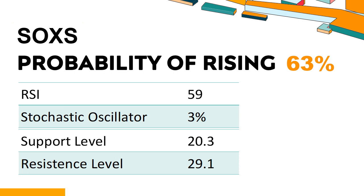How has SOXS performed according to technical data? SOXS's 14-day Relative Strength Index (RSI) value was 59. When the RSI is between 50 and 70, it generally indicates that the stock is moderately bullish. This means that the security's price has been rising but has not yet reached overbought levels, which are usually considered an RSI reading of 75 or higher.